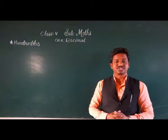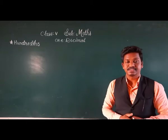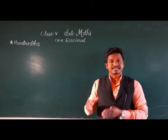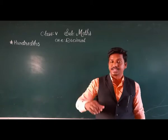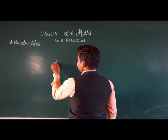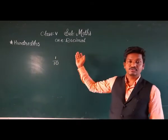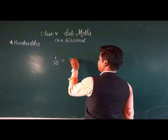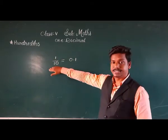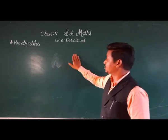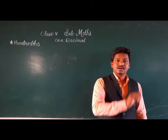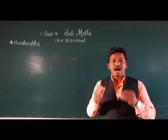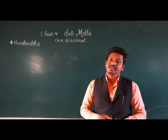Hello my dear students, welcome to today's video lecture of maths. Yesterday we started chapter number 6 on decimals. In the previous lecture we saw tenths — out of 10, when the denominator is 10, like 1 upon 10, how to write it as a decimal: 0.1. Today we will see hundredths and thousandths — when the denominator is 100 or 1000, how to write those fractions as decimals.